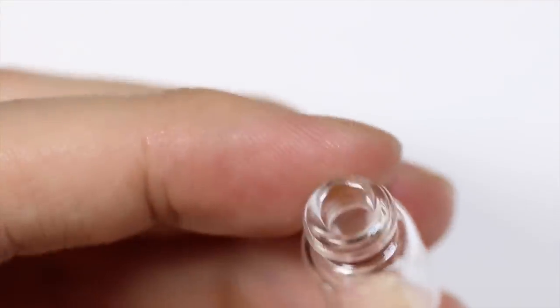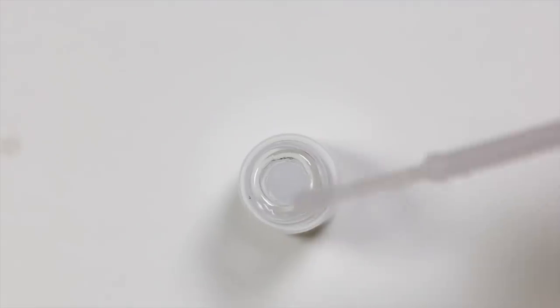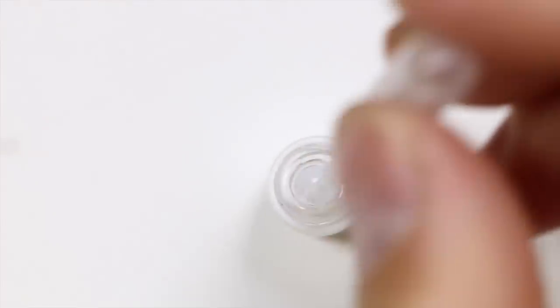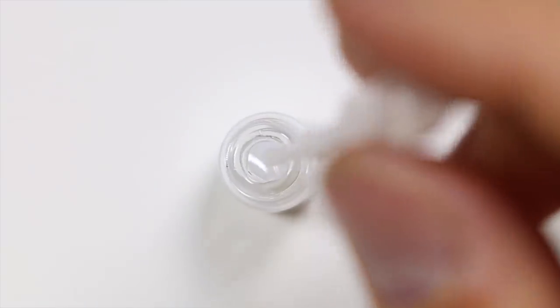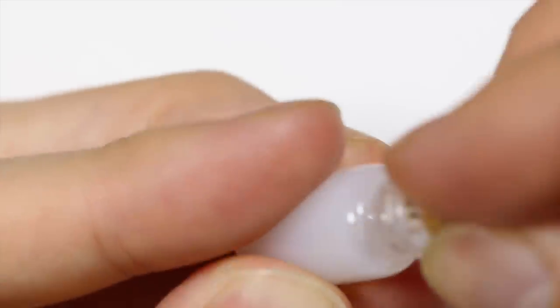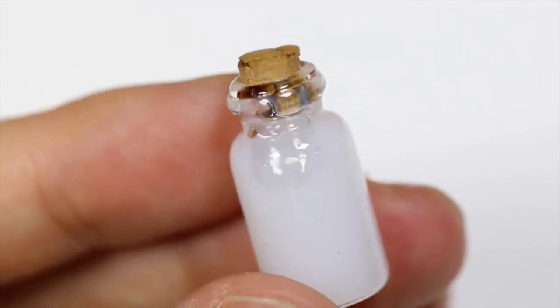For the bottle of milk I got a little glass bottle that I got from Hobby Lobby I believe, but you can get them online. And I poured in the resin using a little pipette. And if you do this you have to make sure that your resin is more on the liquid side and it hasn't hardened at all. And I added my cork to it once I fully filled the bottle with the white resin.